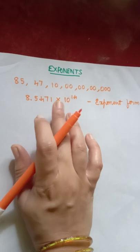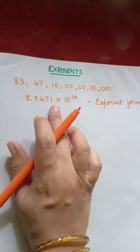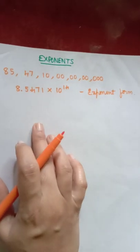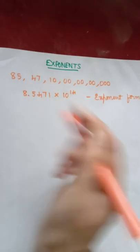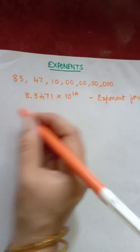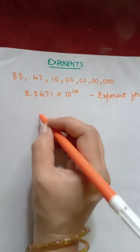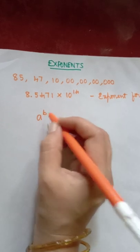Which is easier to read, this one or this one? Definitely 8.5471 into 10 raised to 14 is easier to read. So if you have an exponent term, see a raised to b.